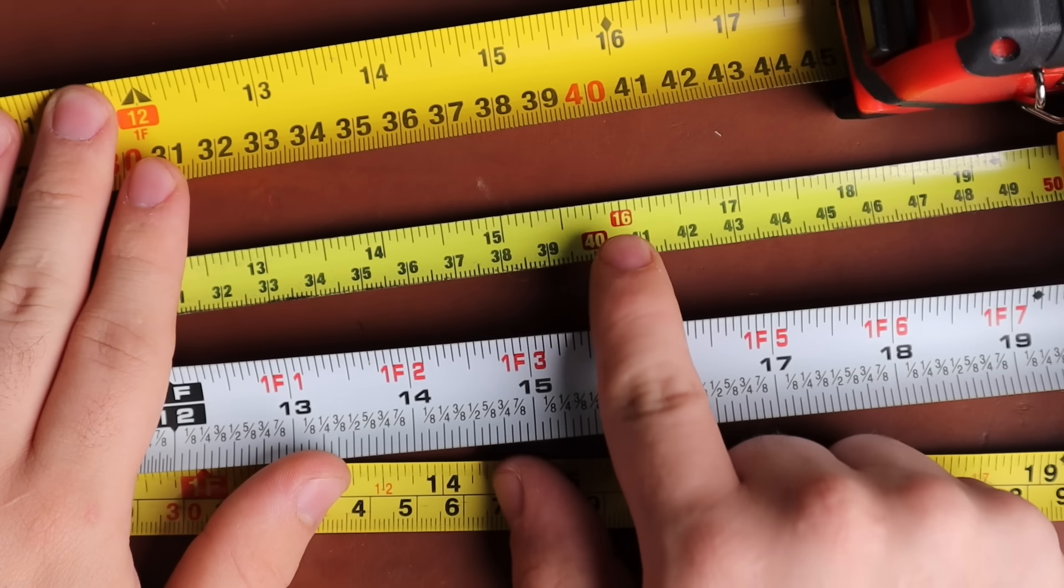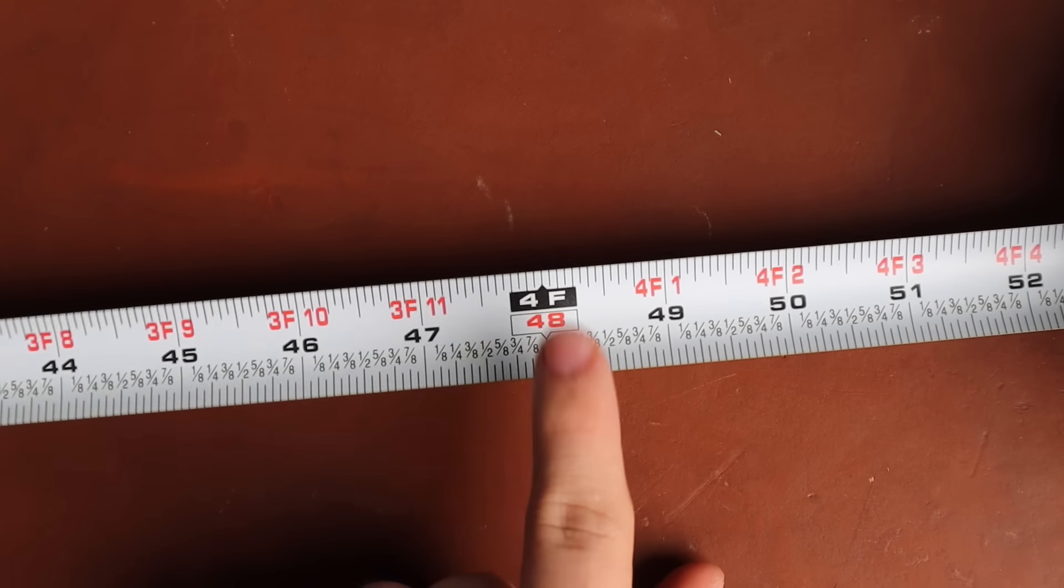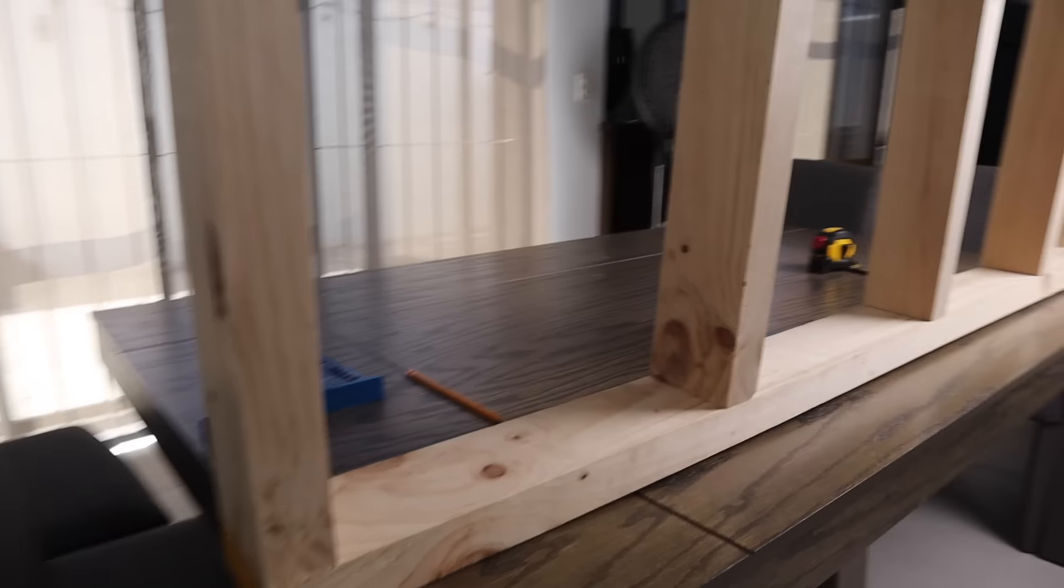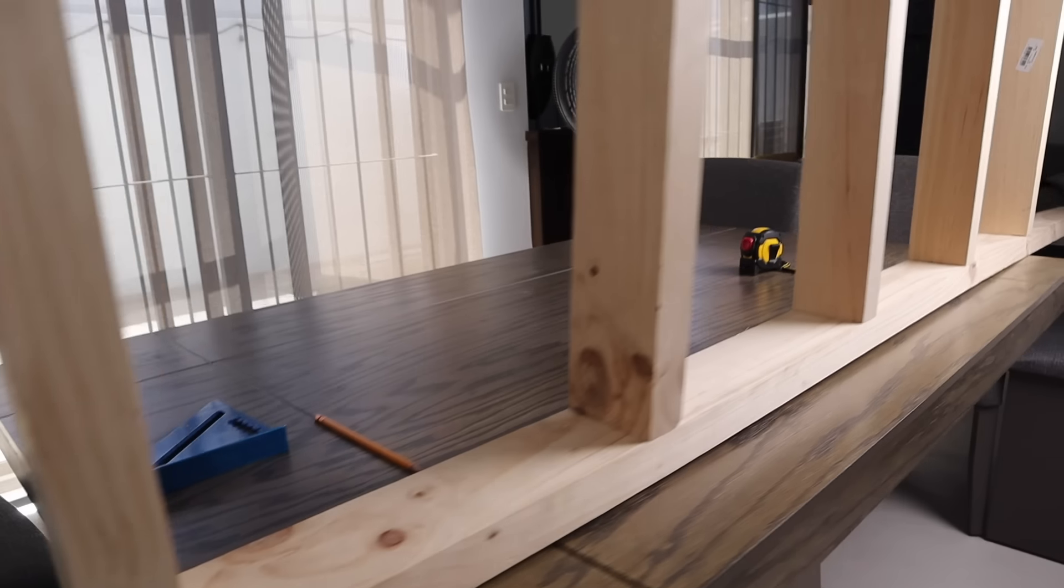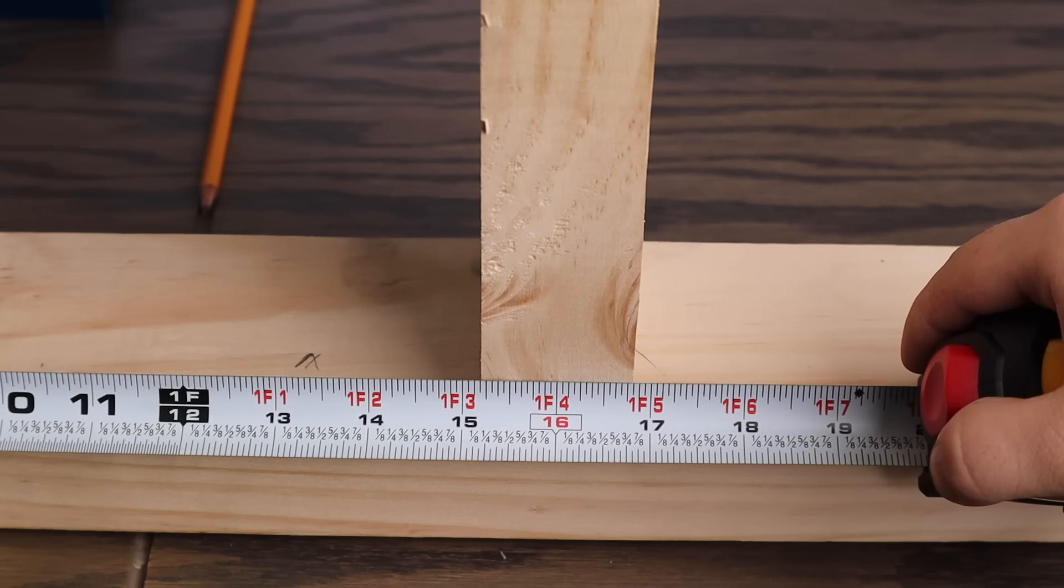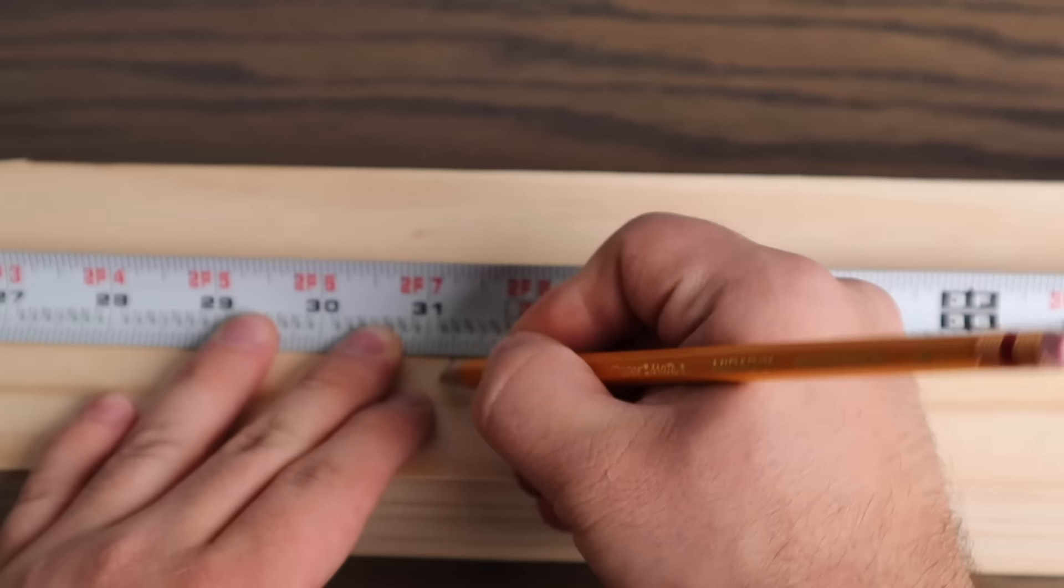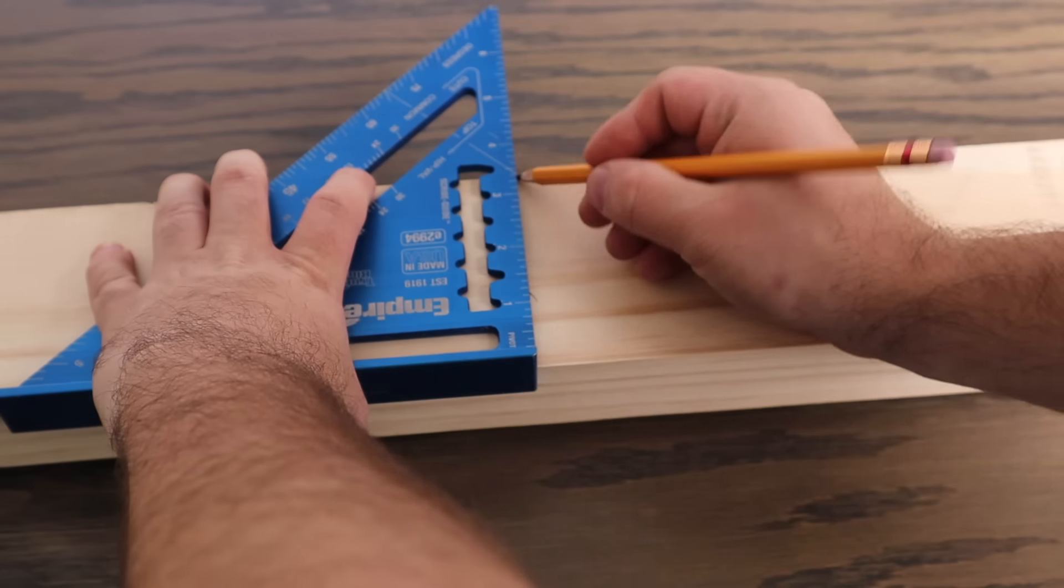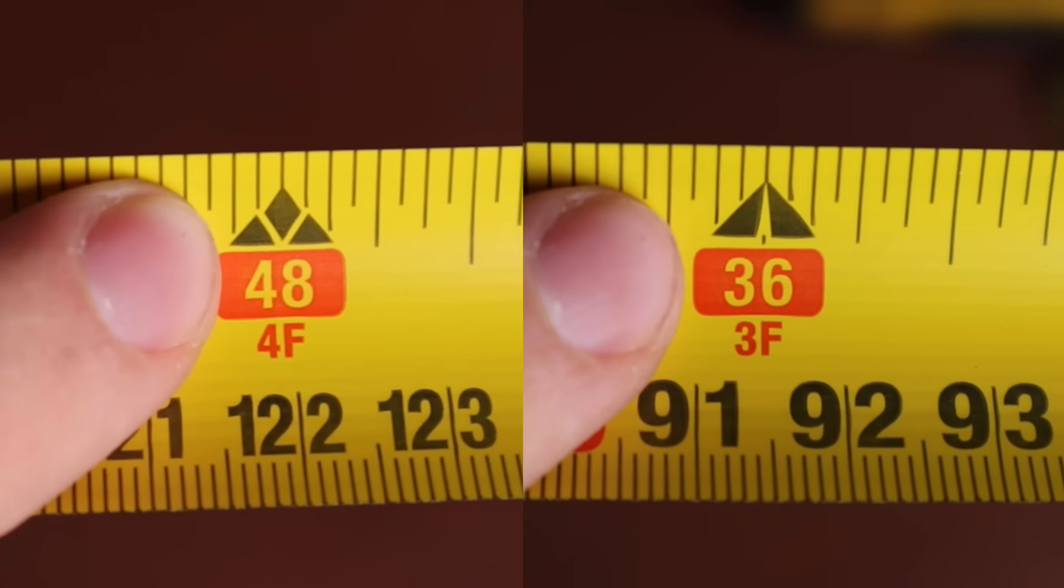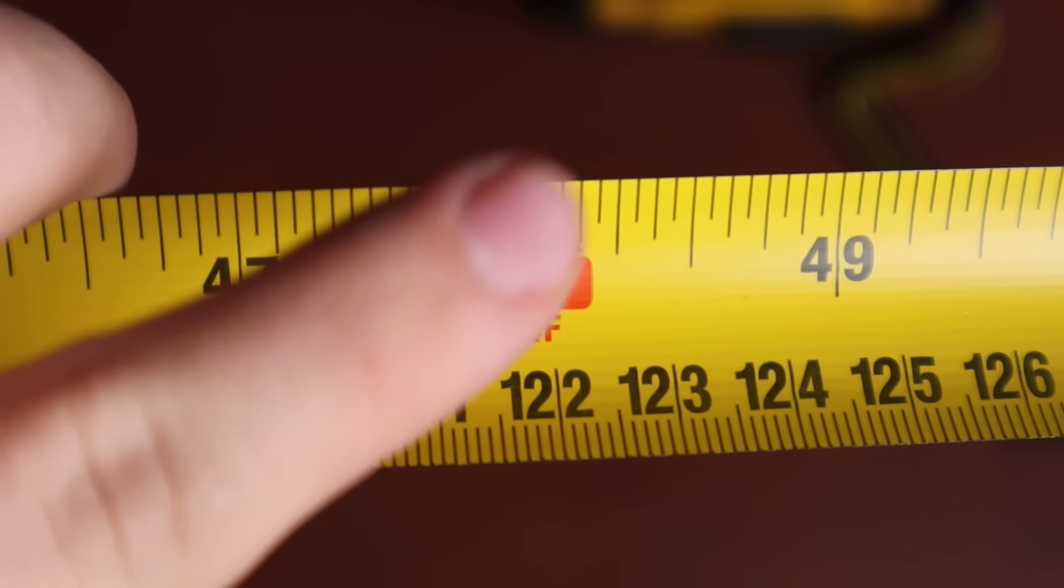Most tape measures will have a mark at 16 inches and subsequently every 16 inches after that. This will either be marked with a color or square or diamond. This is important and very useful when framing walls known as 16 on center, which is the most common. Studs are typically placed 16 inches apart on center. And this mark makes it easy to mark the locations of studs. This mark is found including at four feet, which will be different from the marks on other foot marks, indicating it's a 16 on center mark. And in this case, the indication is with a diamond in the arrow of the four foot mark.